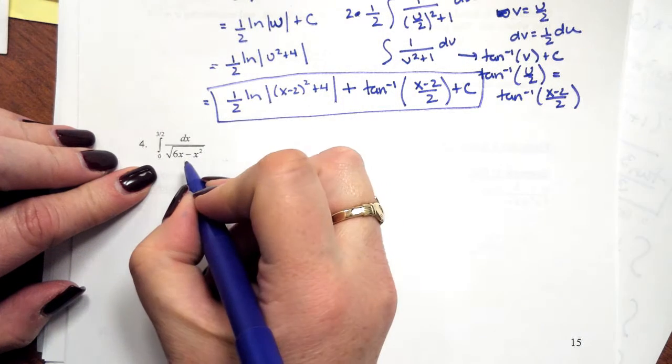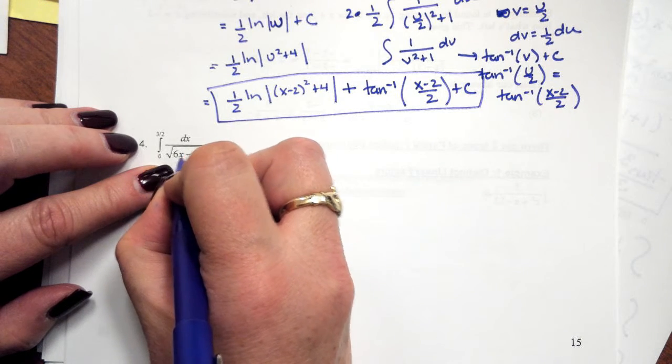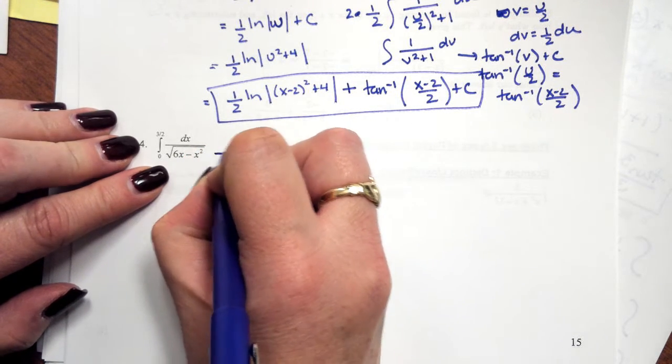First, we have to do our integration. You've got the x squared and the x underneath the radical, so we're going to have to complete the square on the denominator.